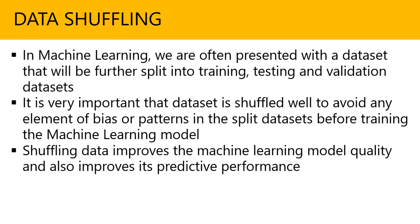Typically it's about training and testing, but I'm also going to talk about validation of datasets as well. It's very important that the dataset is shuffled well to avoid any element of biasness or patterns in the split datasets. Because what happens is you take 100% of your data and do a 70-30 split — the relevant data could end up within the 70% or the 30% of that split, which is going to cause real challenges and issues. So it's important that the dataset is randomly shuffled to avoid biasness or formation of patterns before training the actual machine learning model.